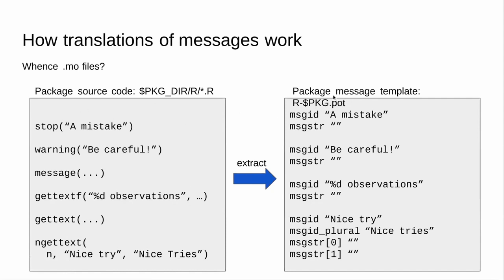Then as developers we do an extraction — extracting all of these strings from our source code and putting them into a template file, the .pot file. We extract a string and it comes out as a message ID. For plurals they have their own slightly different syntax: you get a message ID for the singular case and a message ID for the plural case, with corresponding indices for each. In the .pot template, the message string is always empty because this is just a template — it doesn't have an actual translation in it.